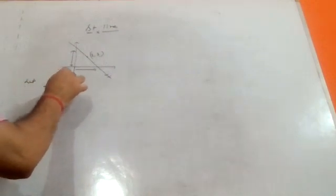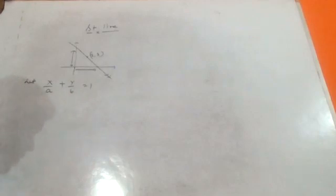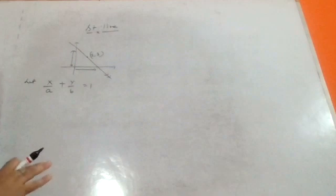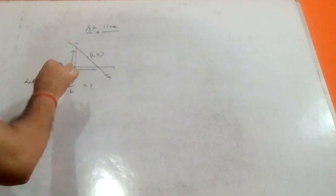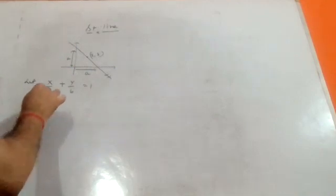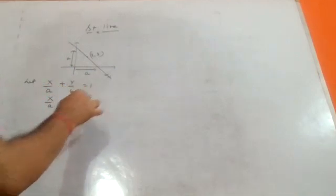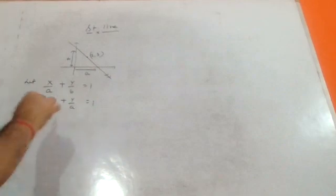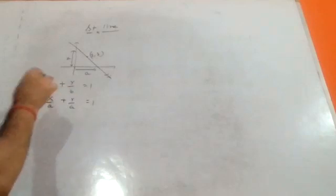So you can say x upon a plus y upon b equal to one — this is the equation of the line. You have to assume equal intercepts, so both intercepts are equal, that is a. So the equation becomes x upon a plus y upon a equal to one. This line passes through the point two comma three, so x equals two and y equals three.